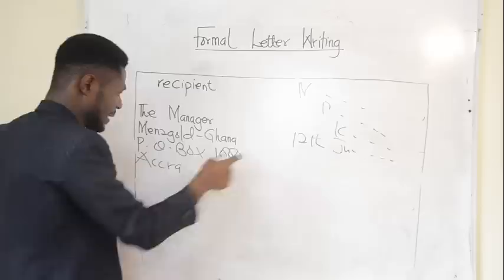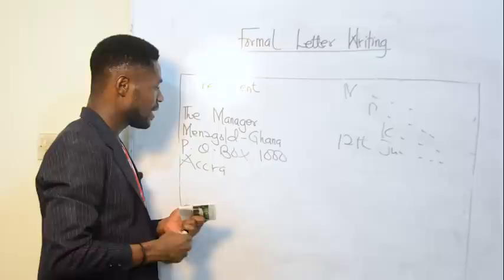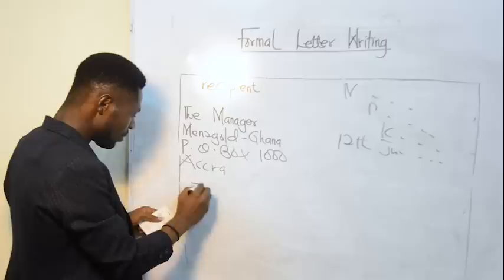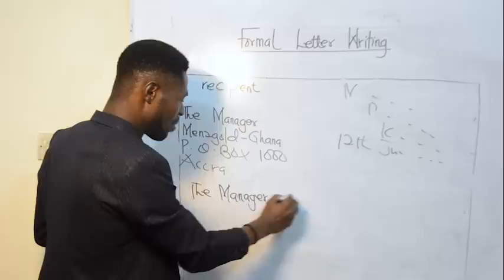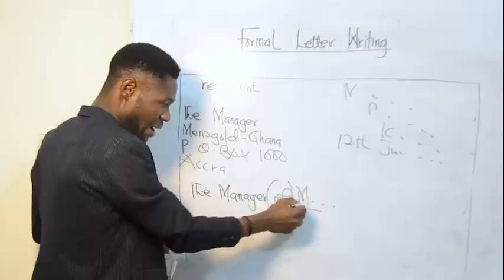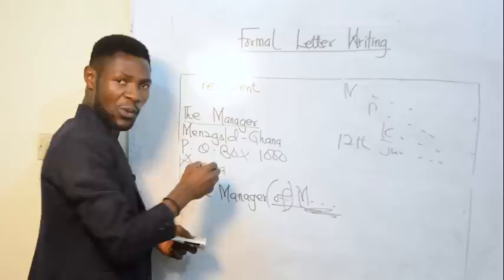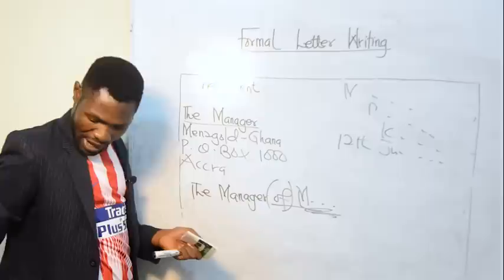One mistake people normally make is writing 'the manager of Men's Goat Ghana' — no. Cancel the 'of' and bring the institution name after the manager's title. This is the manager; where is he working? This particular company. The post office box, that is it. Don't use 'of' between the title and the institution.